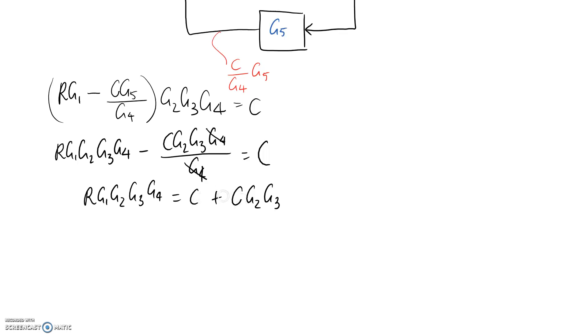I'm now going to factorise these. So it's going to be c outside of 1 plus g2 g3. This still stays the same.